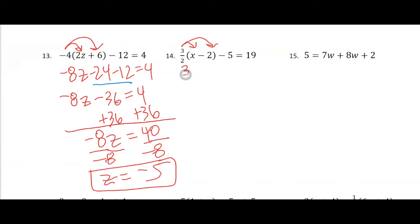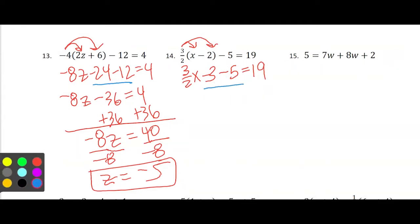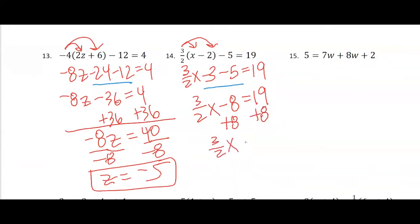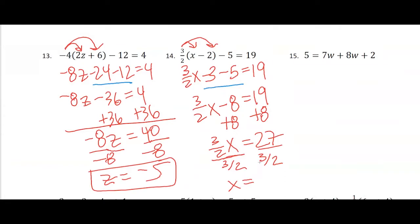For number 14, I can distribute this 3/2 and combine like terms, giving 3/2 x minus 8 equals 19. Then we add 8 to both sides, so we get 3/2 x equals 27. We can either multiply by 2 and divide by 3 in two steps, or divide by 3/2 — which is equivalent to multiplying by 2/3. So we get 27 divided by 3 equals 9, times 2 is 18.